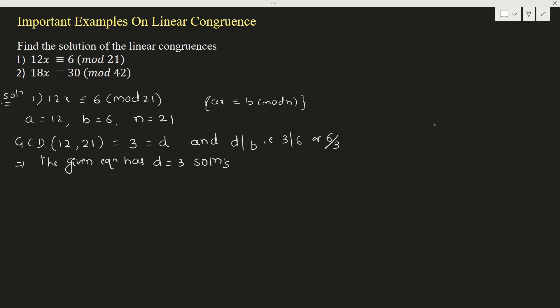For that, divide the given equation (equation 1) by d, where d equals 3. Dividing equation 1 by 3: 12 divided by 3 is 4, 6 divided by 3 is 2, and 21 divided by 3 is 7. So we get 4x ≡ 2 (mod 7).